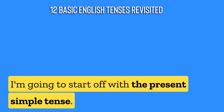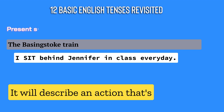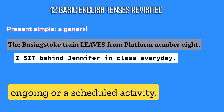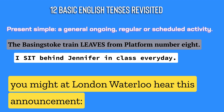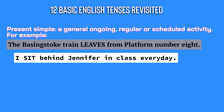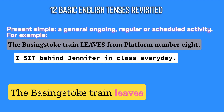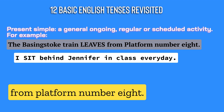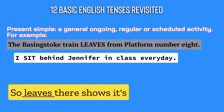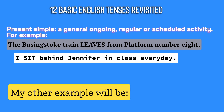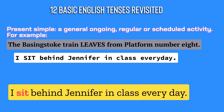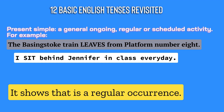I'm going to start off with the present simple tense. It will describe an action that's ongoing or a scheduled activity. If, like myself, you board the business truck train, you might, at London Waterloo, hear this announcement: 'The business truck train leaves from platform number 8.' The word 'leaves' there shows it's a regular or scheduled activity. My other example would be: 'I sit behind Jennifer in class every day.' It shows that that is a regular occurrence.